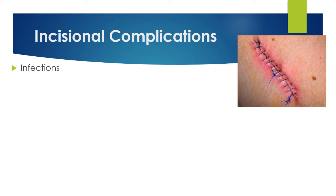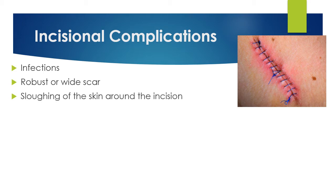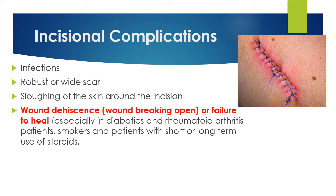Incisional complications include superficial infections and scarring. Depending on the type of surgery, the scar could be robust or leave a wide scar. Sloughing of the skin around the incision can occur. One of the main complications is wound dehiscence, which means the wound is unable to heal — failure of healing where the wound remains open or breaks open.